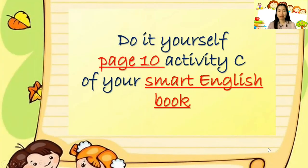This time I want you to do it yourself. The activity is on page 10, find letter C of your Smart English book. You have numbers one to eight — find the missing letters. Good luck, everyone, and see you next class. Bye!